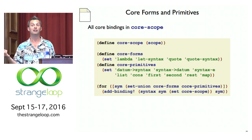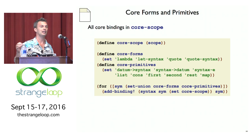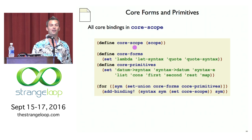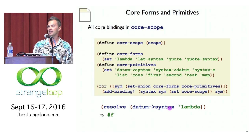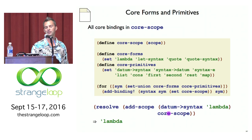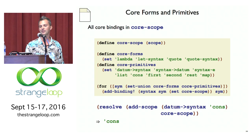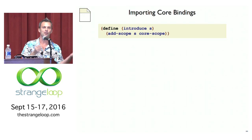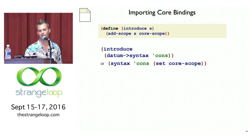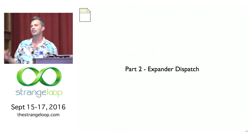We need to put all the primitives somewhere. There are no reserved words — you can use lambda as a local variable name if you want. All of the core forms are bound in a particular scope: the core scope. When you start your program, you import the core scope, and that's how you get lambda and all the other things. Lambda with no scopes would resolve to false, but lambda with the core scope added resolves to the primitive lambda form. We wrap this up as an introduce function — all it does is add the core scope.